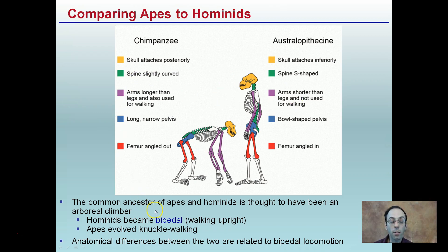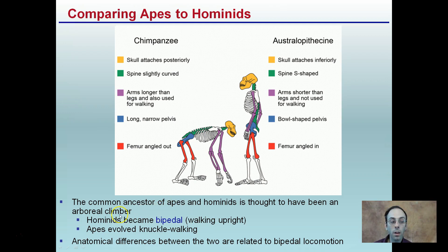The common ancestor for both apes and hominids is thought to have been an arboreal climber. Hominids became bipedal — meaning walking upright, bi meaning two, pedal meaning walking. Apes evolved knuckle walking, giving them that hunched-over appearance you can see here.